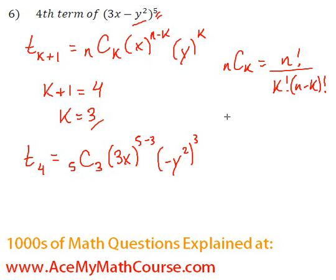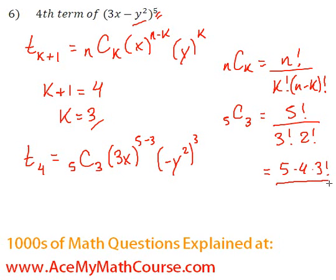Now we want to know 5 choose 3. So, 5 factorial all over 3 factorial, 2 factorial. Once again, I'll mention it. I'll do it quickly because we have done it on the website before and you can check it out right here under combinatorics. How to do combinations and factorials. So, if these cancel out, we'll get 5 times 4 divided by 2, which is 10.